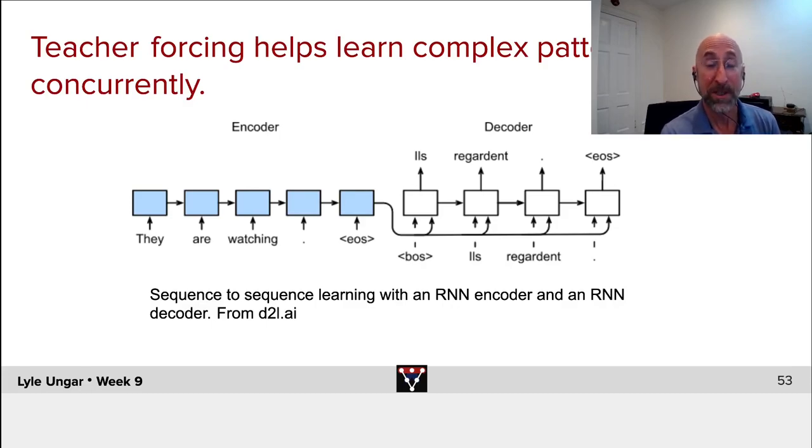Then at runtime when it's actually making a prediction, of course, then it doesn't have the true word il, regarde. It just puts in whatever it predicted before as its input. And this vastly makes the gradient descent easier, the search to find the right weights. So, sequence to sequence, give it a try.